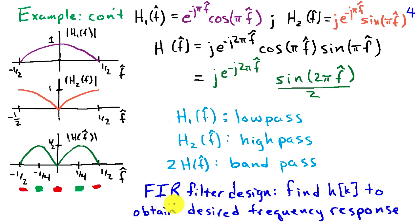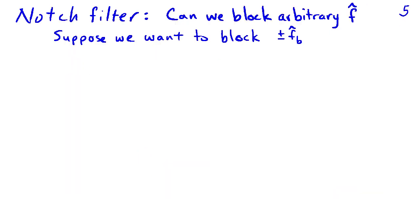The general problem of FIR filter design is to find an impulse response or the coefficients of the equation relating the input to the output in order to obtain some desired frequency response. In general, we're going to want to generate more complicated designs and responses, and that's the general problem of FIR filter design. Now let's use the ideas we've generated to see if it's possible to design a notch filter.